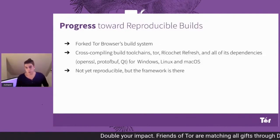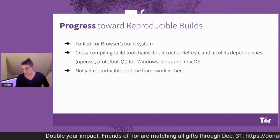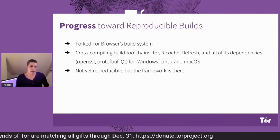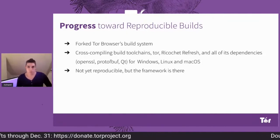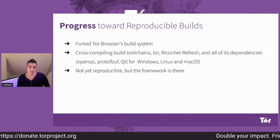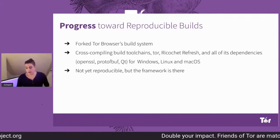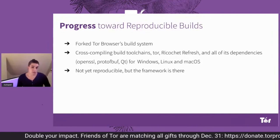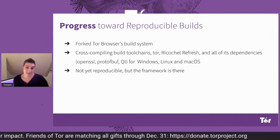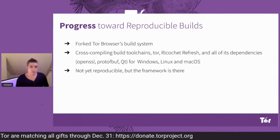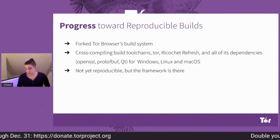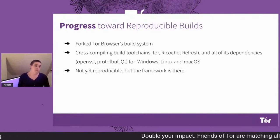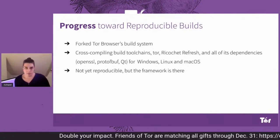We've made very good progress toward reproducible builds. We started off by forking the Tor browser build system and ripping out almost all of it, apart from the build toolchains needed to build Tor, and added configurations for building Ricochet Refresh and all its dependencies. It's not yet reproducible, but the framework is there — we can at least cross-compile and have a standardized build environment.